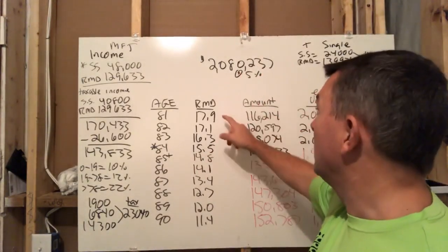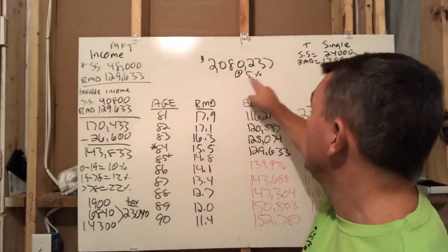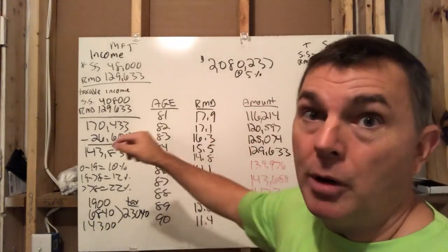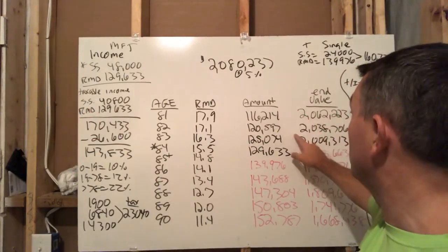So here's their RMD factors: 17.9, 17.1. You can see that. So at 81, they had to take out 116,000 of RMDs, required distribution. You take this amount right here, divide by that amount, by this amount. So this divided by that gives you this. Then you add the remainder of this minus this, you times that by 1.05 because that's a rate of return. That leaves them with an account value at the end of when they're 81 of 2.062 million.